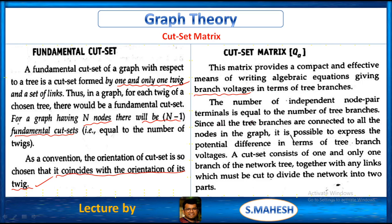This matrix provides a compact and effective means of writing algebraic equations giving branch voltages in terms of tree branches. The number of independent node pair terminals is equal to the number of tree branches, since all the tree branches are connected to all the nodes in the graph.